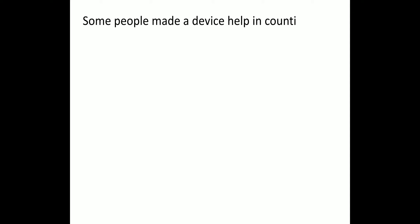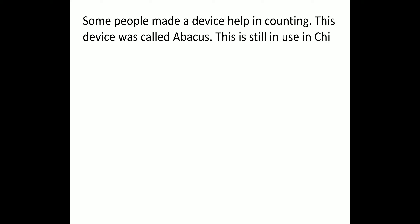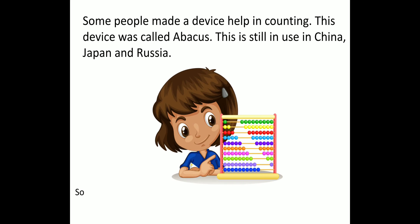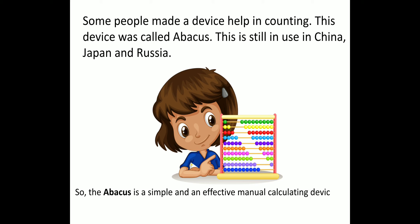Some people made a device to help in counting. This device was called Abacus. This is still in use in China, Japan, and Russia. Here is the figure of Abacus. The Abacus is a simple and effective manual calculator, or calculating device.